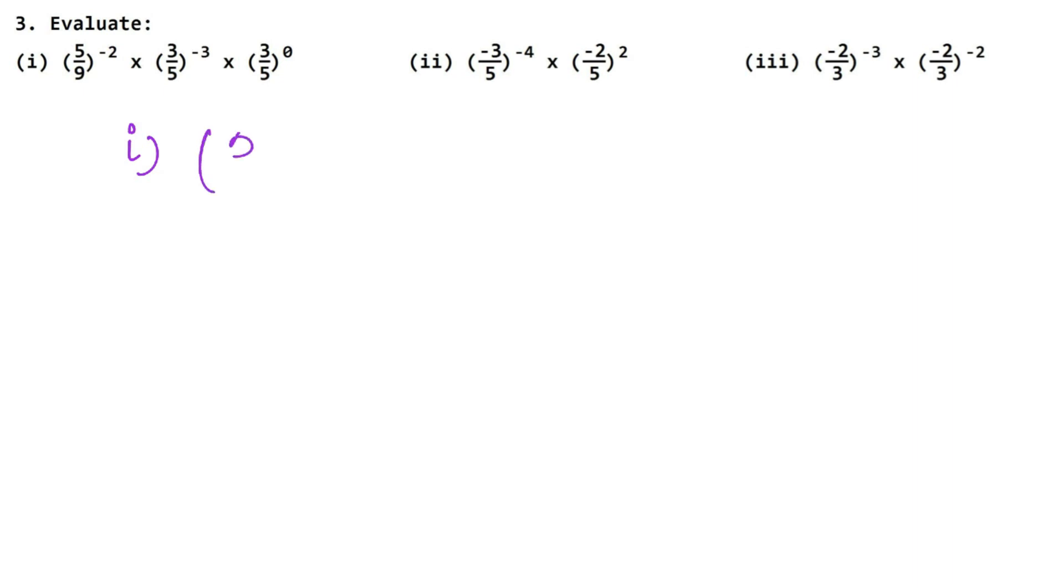5 upon 9 power minus 2 into 3 upon 5 power minus 3 into 3 upon 5 power 0. Now, let's take a look at one thing. The power is minus here, but here it is 0. First of all, the other thing is that the base values are both different, but the base values are the same.